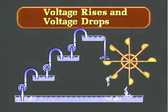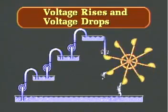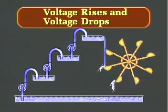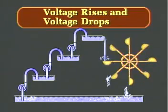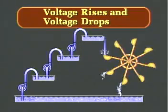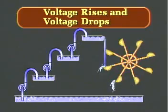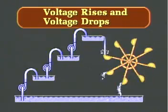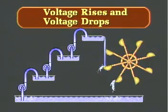In the second segment, Voltage Rises and Voltage Drops, we will see how voltage increases, or rises, when voltage sources are connected in series, and how voltage decreases, or drops, as the electrons flow through a load and give up energy in the form of heat, light, or motion.